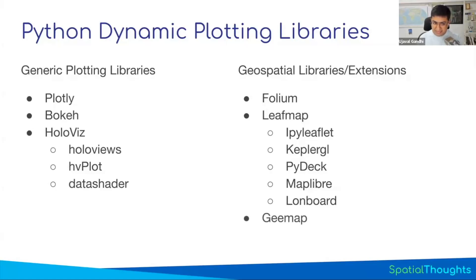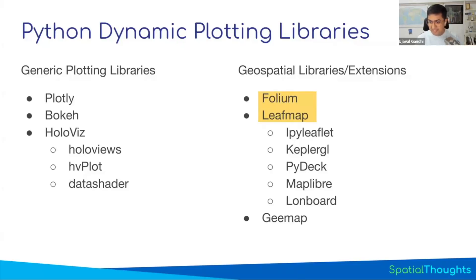Leafmap is a cousin of another library called geemap. If you're using Google Earth Engine and want to create interactive maps, geemap allows you to do this. We're going to learn Folium, which will form the base of everything, and then we'll learn leafmap, which gives you a good foundation so that regardless of what library you want to use, you just learn leafmap and change the backend to use any of the libraries you need.